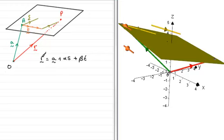The position vector then of any point on the plane is equal to the vector that takes us from the origin to a fixed known point on the plane plus a certain amount in the directions of the vectors s, followed by a certain amount in the direction of the vector t.